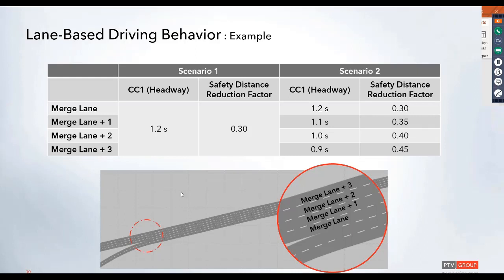For the second scenario, we have this broken up by lanes. Here you can see this will be the main merge lane, where the on-ramp traffic will enter. And then we have the following lanes, plus one, plus two, and plus three.